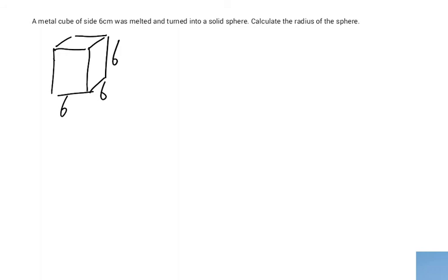It's a metal cube and we are melting it and it's turned into a solid sphere. So we are melting the cube and we turn that into a sphere, a solid sphere, which is like a three dimensional circle and like a football. Calculate the radius of the sphere. Now, when we are melting it, we assume that no volume is being lost. So the volume of the cube equals the volume of the sphere.